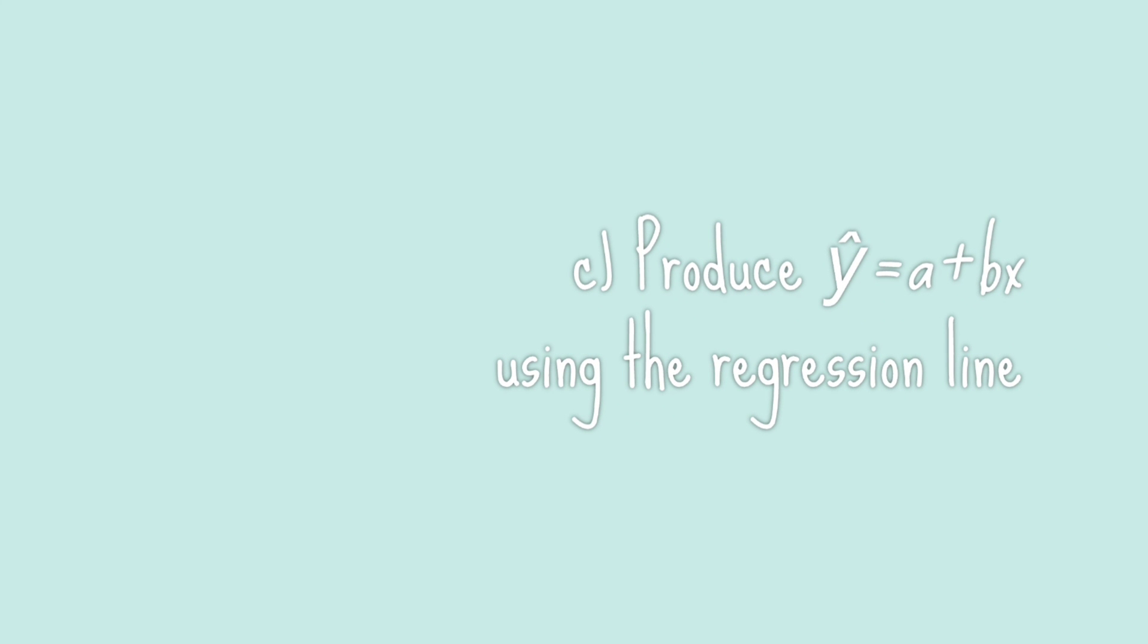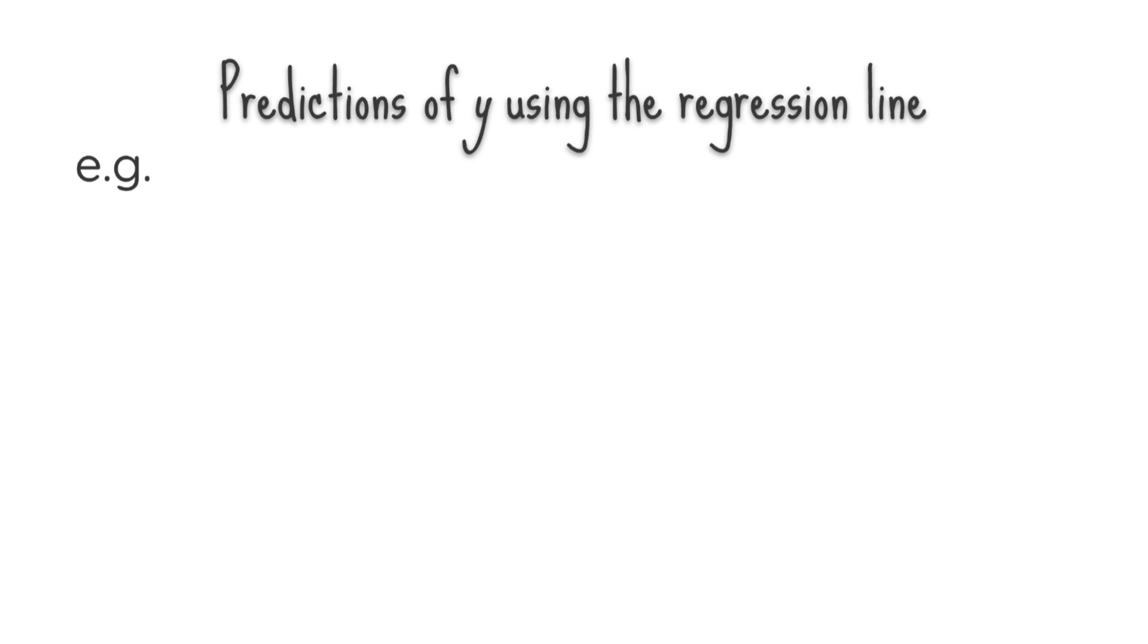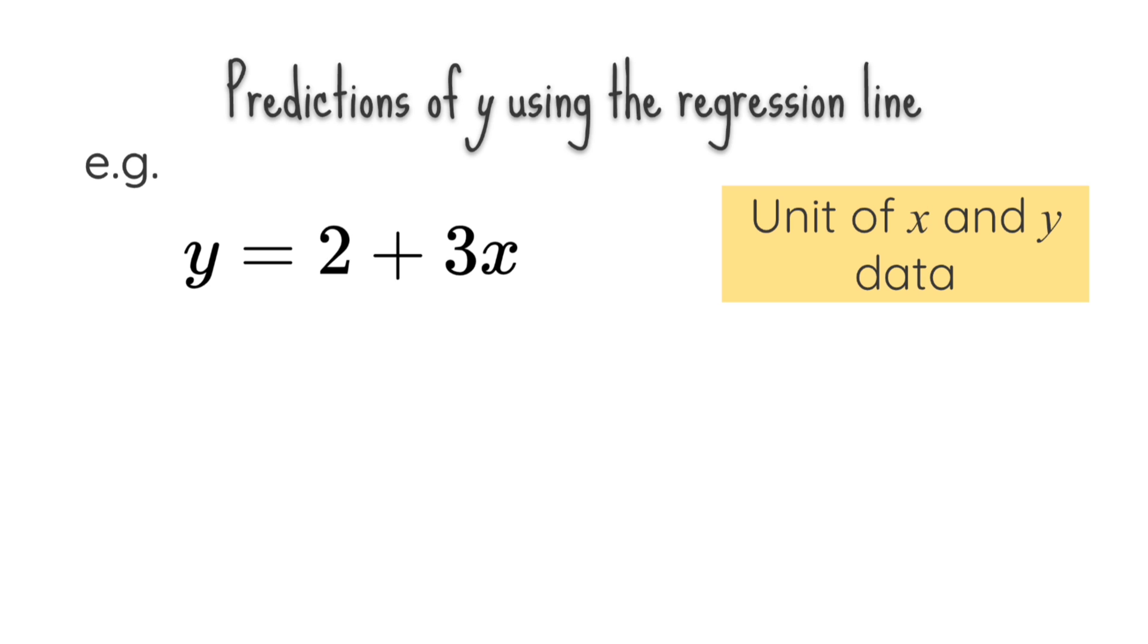Now we come to the final part of our lesson which is how to produce y equals to a plus bx using the regression line. Predicting value of y for a given value of x is obtained by making a simple substituting value of x into the regression line. For example, let's say we have y equals to 2 plus 3x. Make sure the unit of x and y data are in the correct terms.